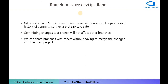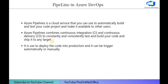What are branches in Azure DevOps? Git branches are small references that keep an exact history of commits, and they are cheap to create. When a developer works on a task, they create their own branch, commit code there, and at deployment time all branches are merged into the main branch before going to production. Committing to a branch will not affect other branches. We can also share branches for code review without merging changes into the main project.